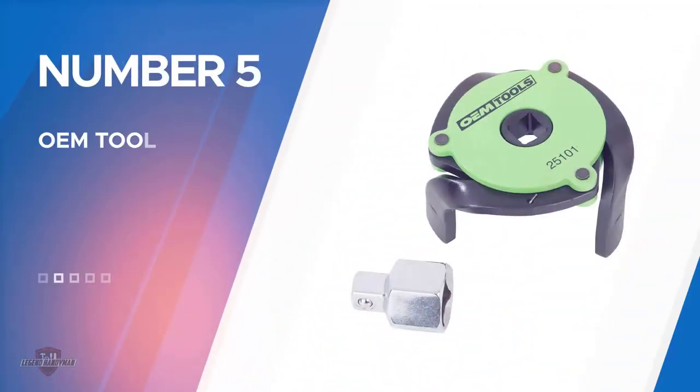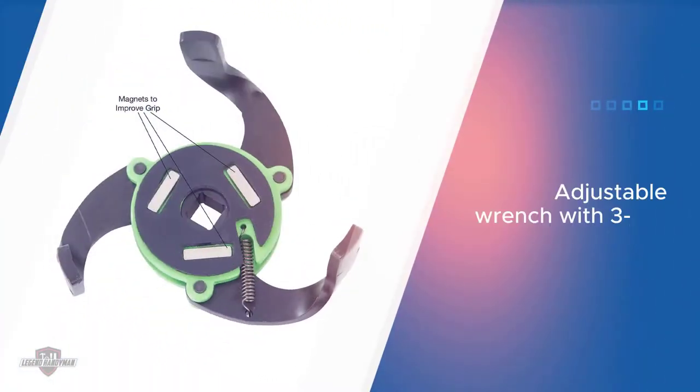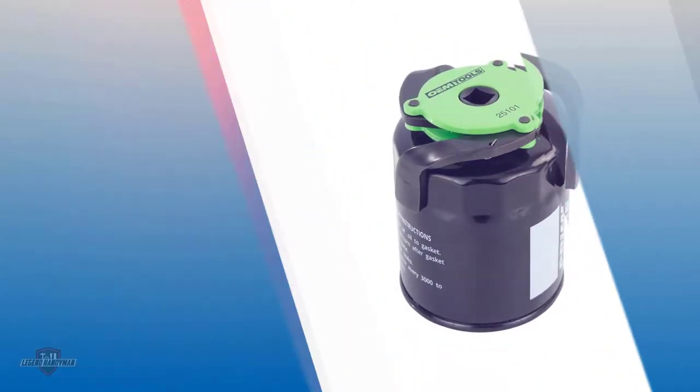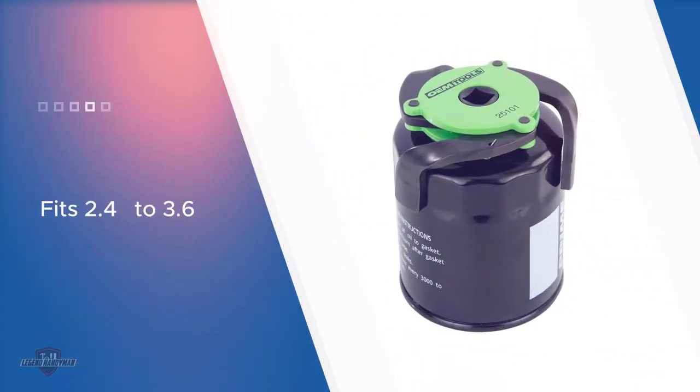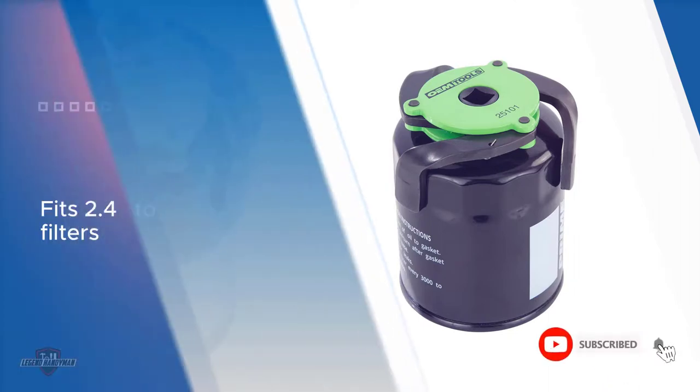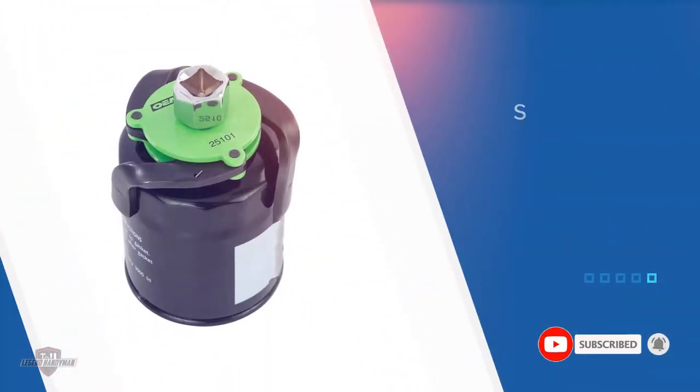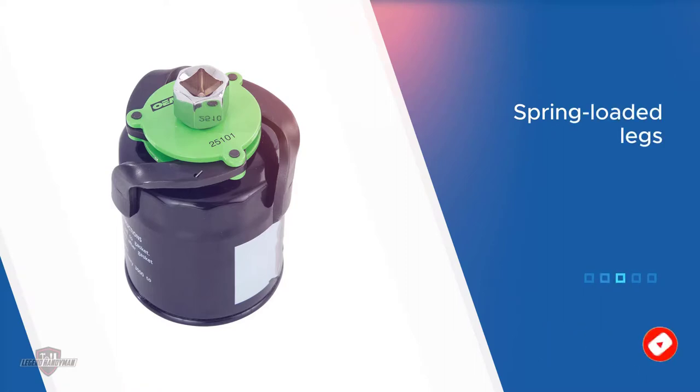Number five: OEM Tools 25101 oil filter wrench. Our last recommended oil filter wrench comes from OEM Tools. Sporting a flashy green finish, this is an adjustable magnetic oil filter wrench with a 3 jaw design. It fits oil filters from 2.4 to 3.6 inches and includes a 3/8 to 1/2 drive adapter. Spring loaded legs provide a secure grip on the filter along with its magnetic base attachment.